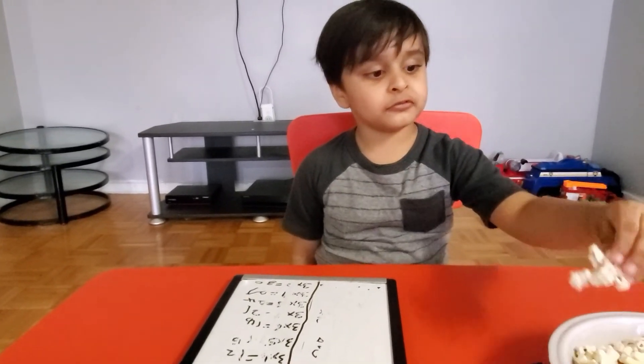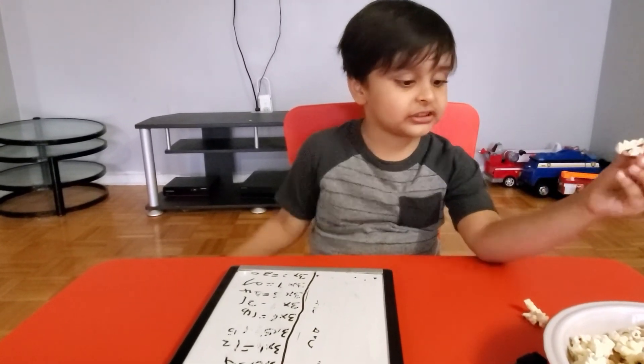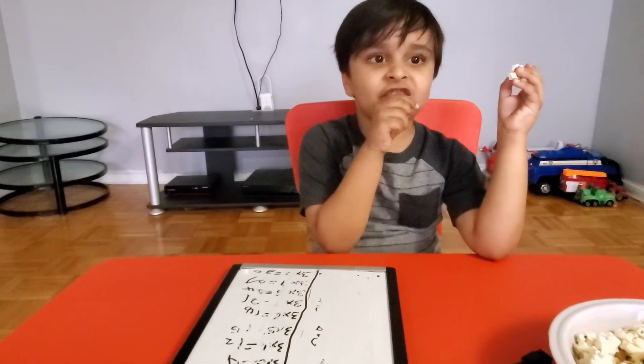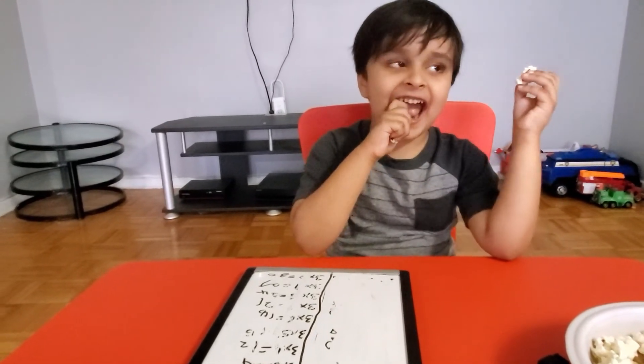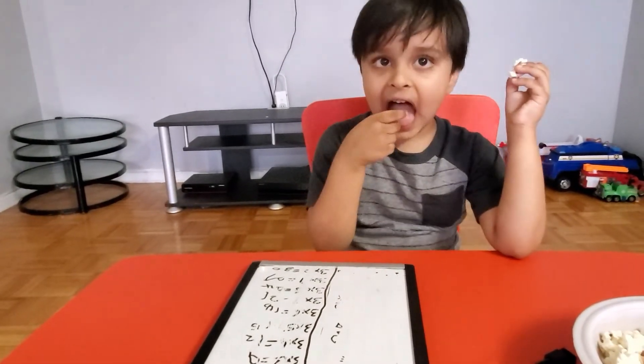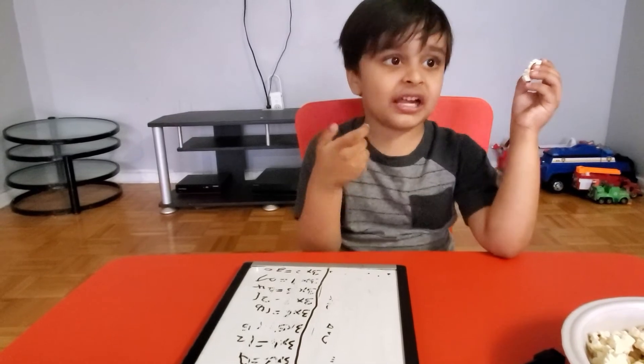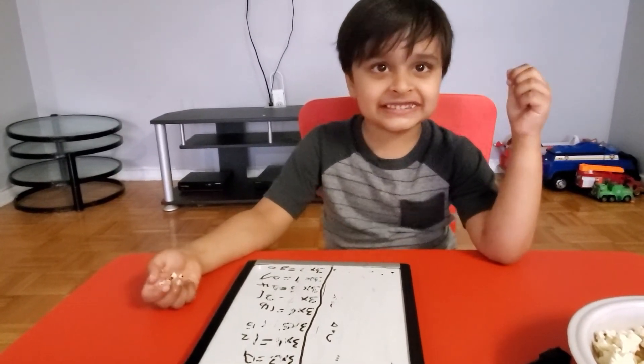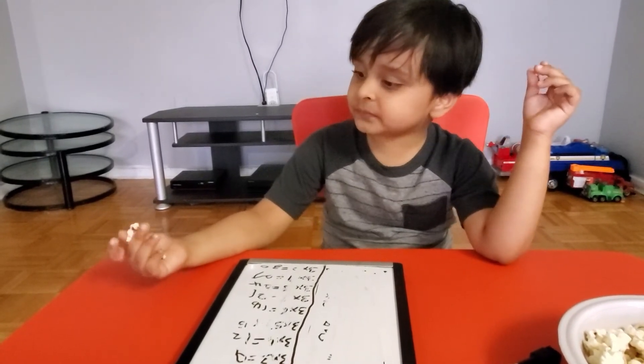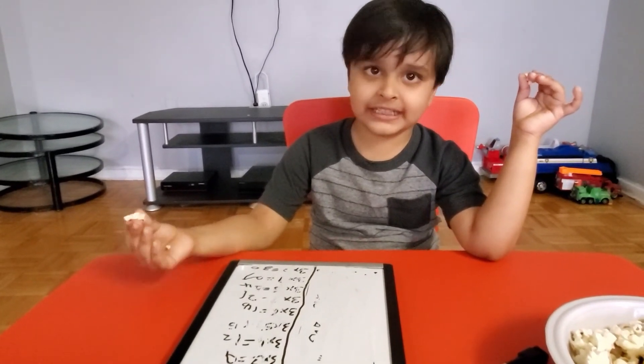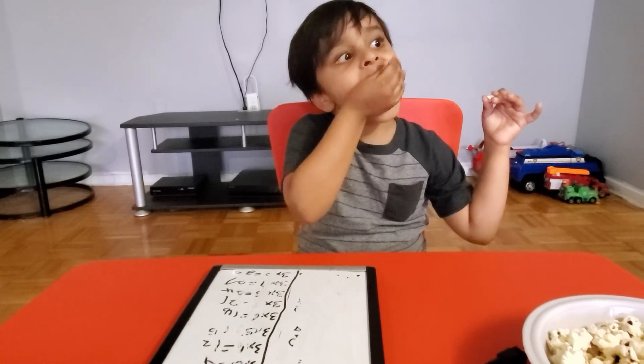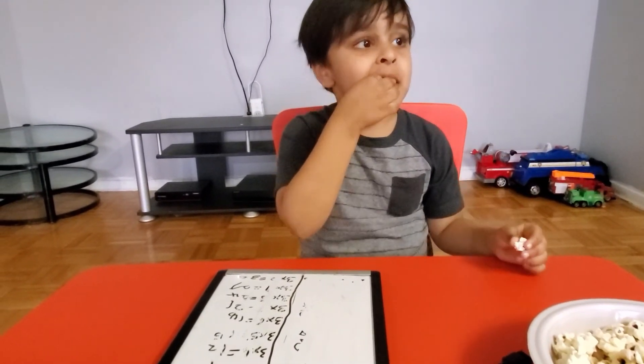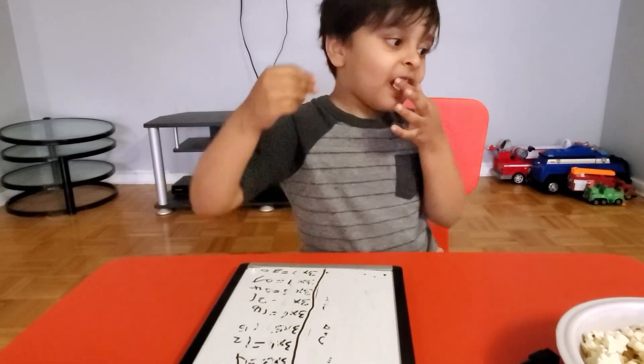Three times seven? Twenty-one. Eight times four? Thirty-two. Nine times five? Forty-five. Four times nine? Four times nine... it's thirty-six. Yes, that's okay.